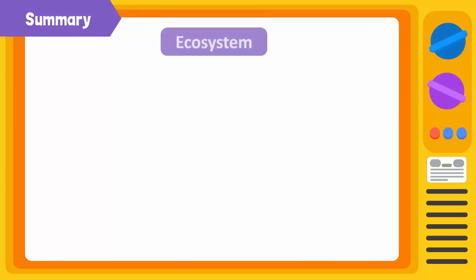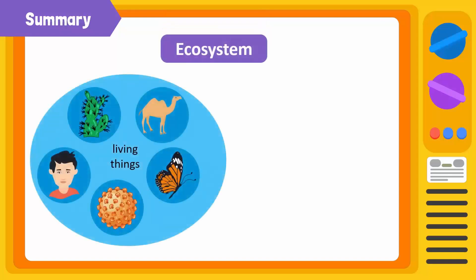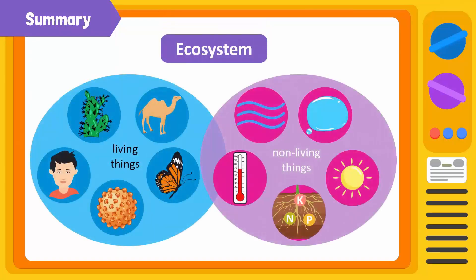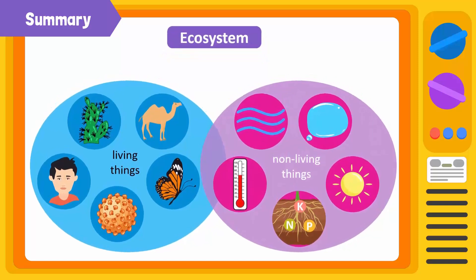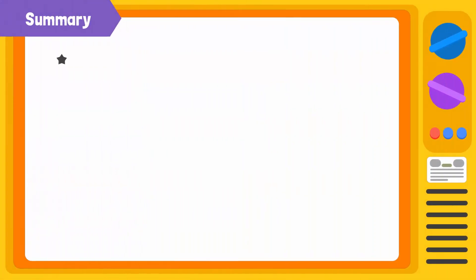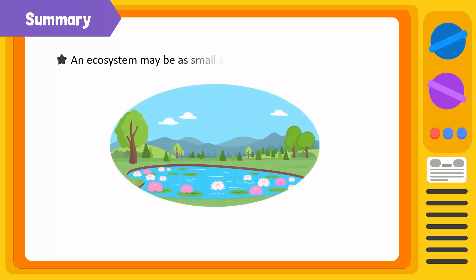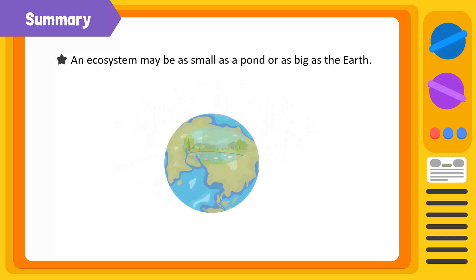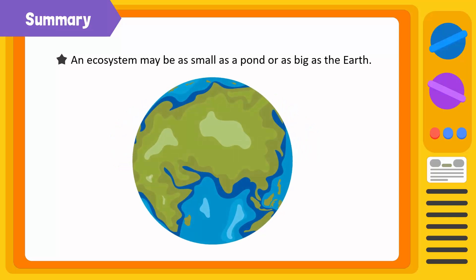To summarize: an ecosystem consists of all living things and non-living things in a given area and their interactions. Living things in an ecosystem are called biotic components, while the non-living things are called abiotic components. An ecosystem can be as small as a pond or as big as the Earth.